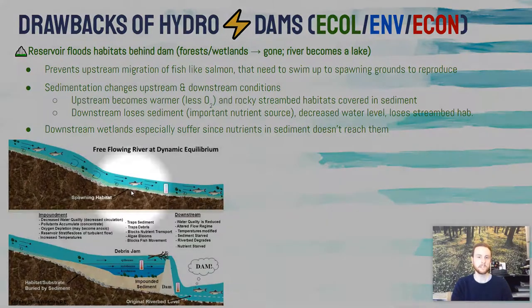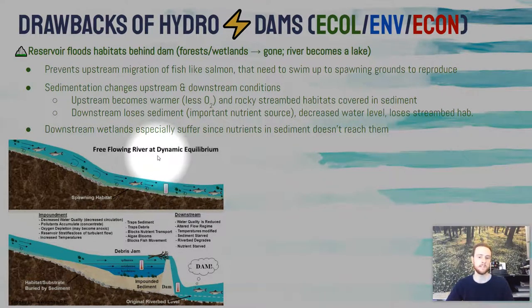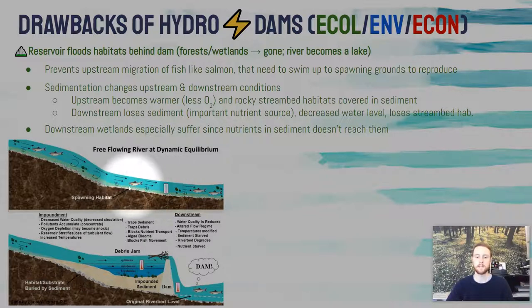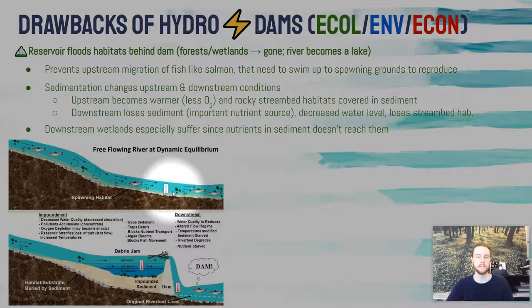This graphic helps us understand both upstream and downstream impacts. In a free-flowing river without a dam, we have fast-moving, cooler water — it's shallower and moves too fast to absorb much sunlight. We also have what's called a spawning habitat, or rocky stream bottom, which is important for fish to lay their eggs and for macroinvertebrates — basically large aquatic insects — to live in, making it a really valuable habitat within the stream.